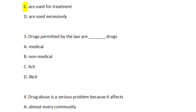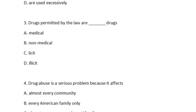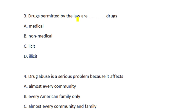Question three: Drugs permitted by the law are dash drugs — A) medical, B) non-medical, C) licit, D) illicit. From the passage, drugs that can be produced, sold, and used legally are called licit drugs. Legally means according to law, so drugs permitted by law are licit drugs. The answer is C — licit.